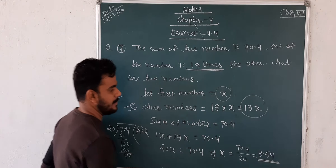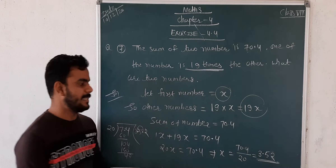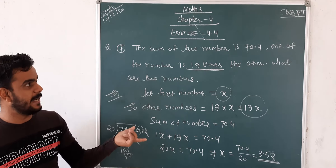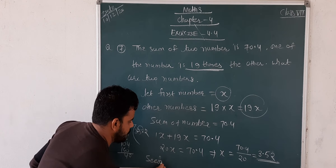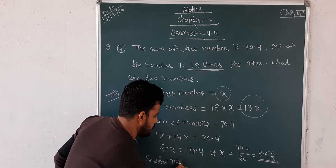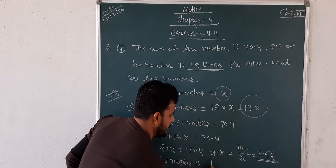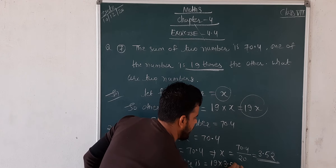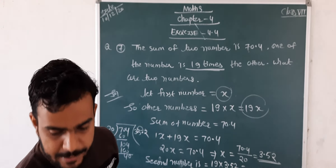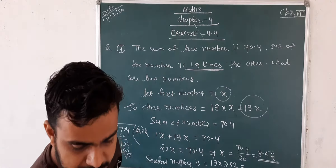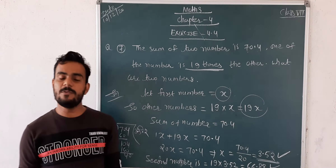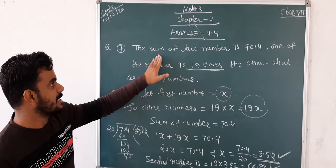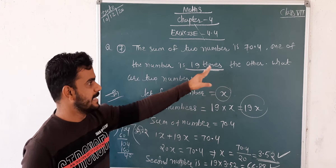So our first number is 3.52. To find the second number, we have to multiply this number by 19. The problem says the sum of two numbers is 70.4 and one number is 19 times the other.